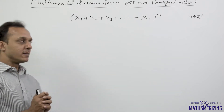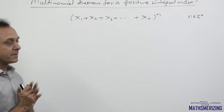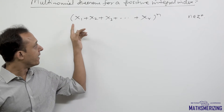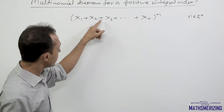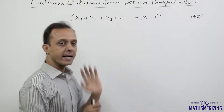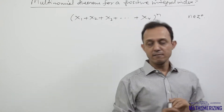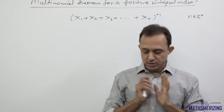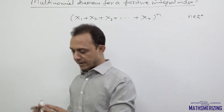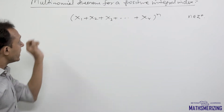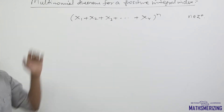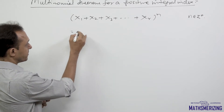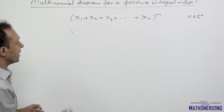After the binomial theorem, the next obvious step is the multinomial theorem. In multinomial, we'll have terms like x1 plus x2 plus x3 plus xr, whole to the power n, where n is a positive integral index. Now, how do we write the expansion for the multinomial theorem?